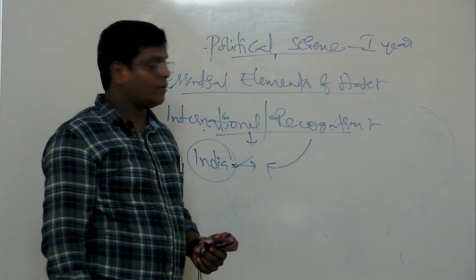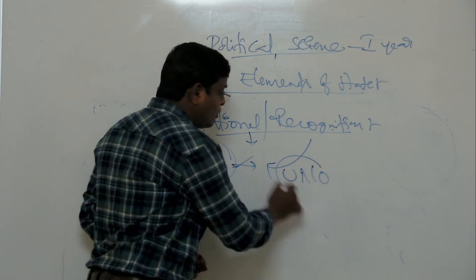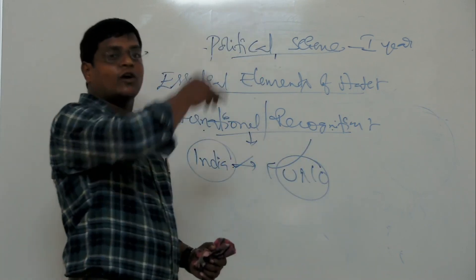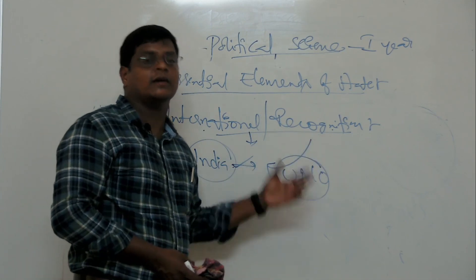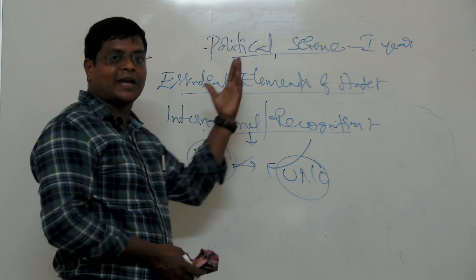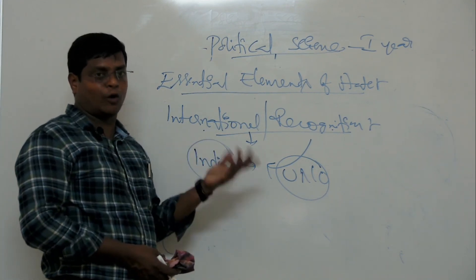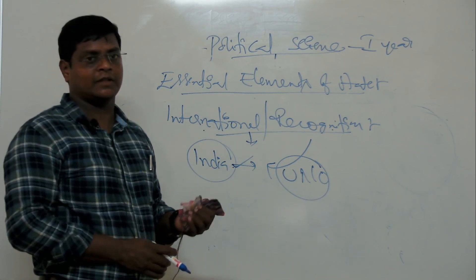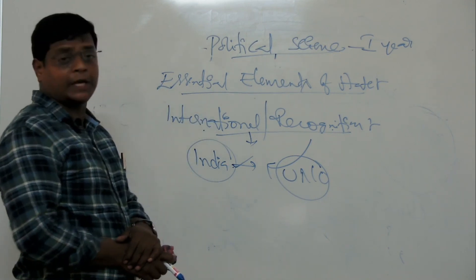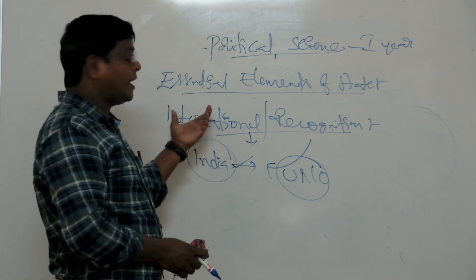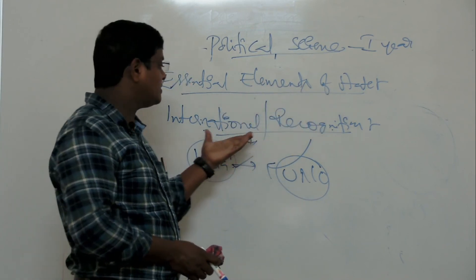International recognition is required because if a country is recognized by abroad countries, they may render their help to us — otherwise there is no aid or advice from abroad. So these are the essential elements of the state. There are four essential elements: People, Territory, Government, and Sovereignty. Besides the four, one more recent essential element is International Recognition. Thank you.